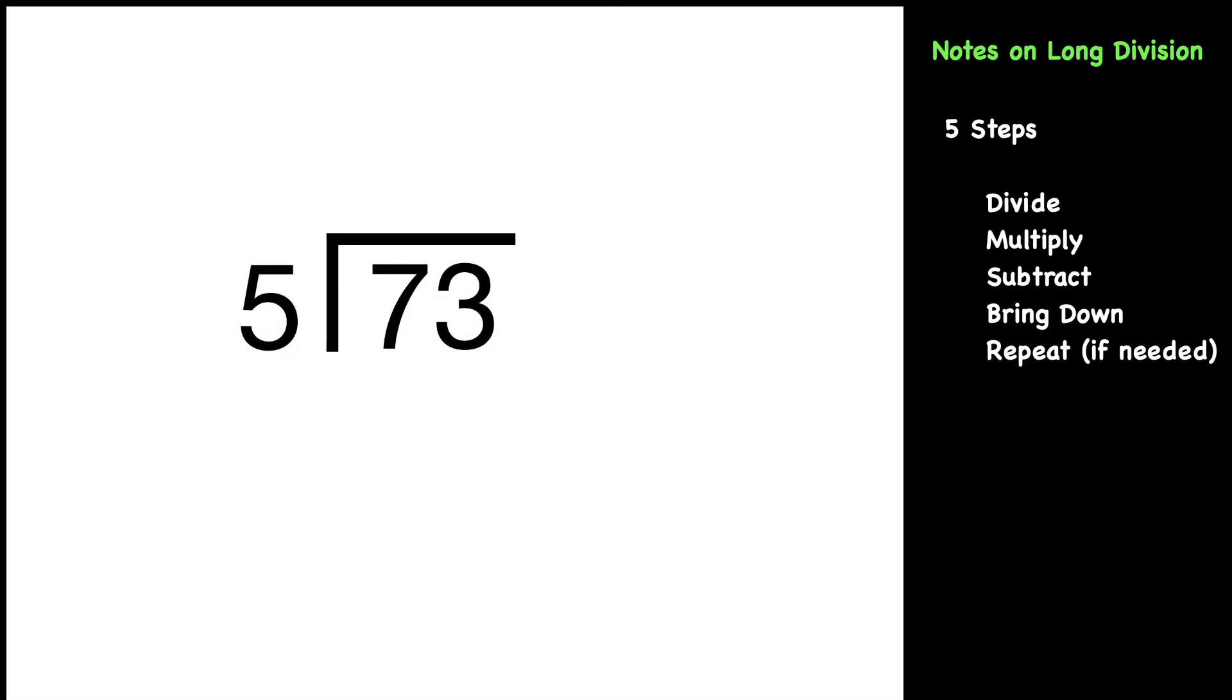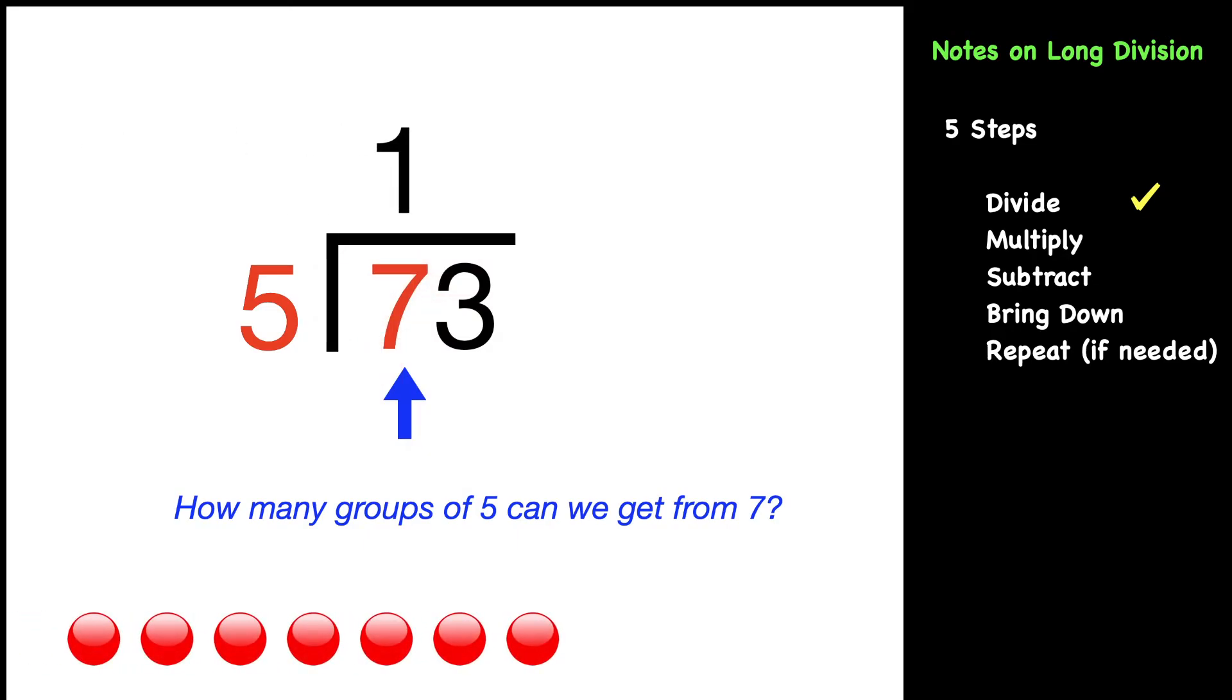73 divided by 5. We're going to divide digit by digit. How many groups of five can we get from seven? In this case, we can get one. If we show the red dots, notice we can get a group of five from that seven.